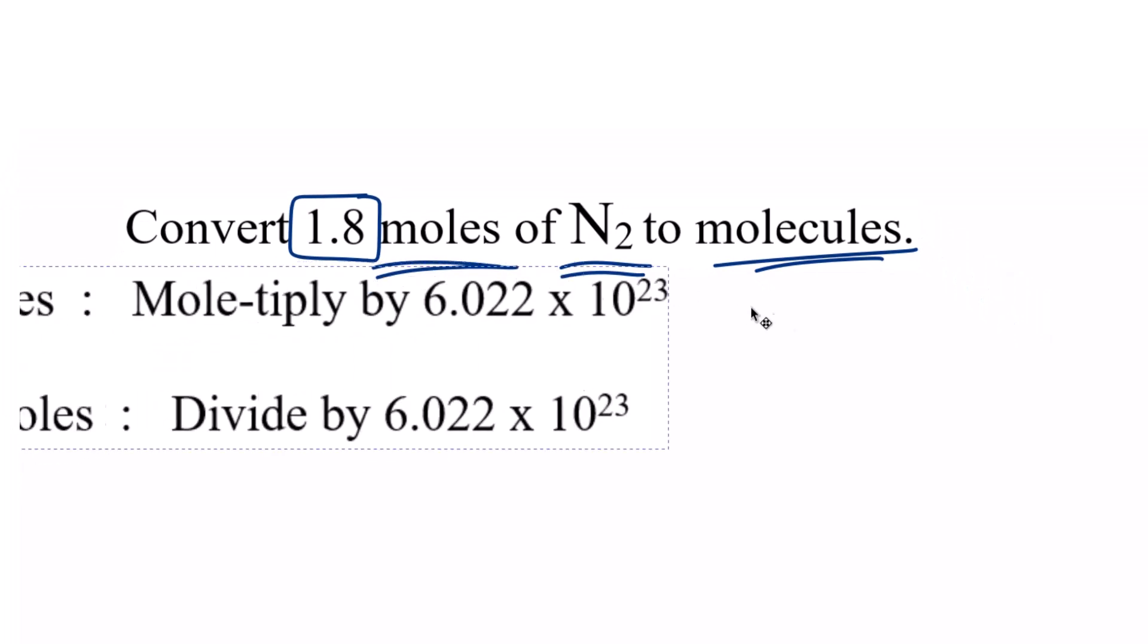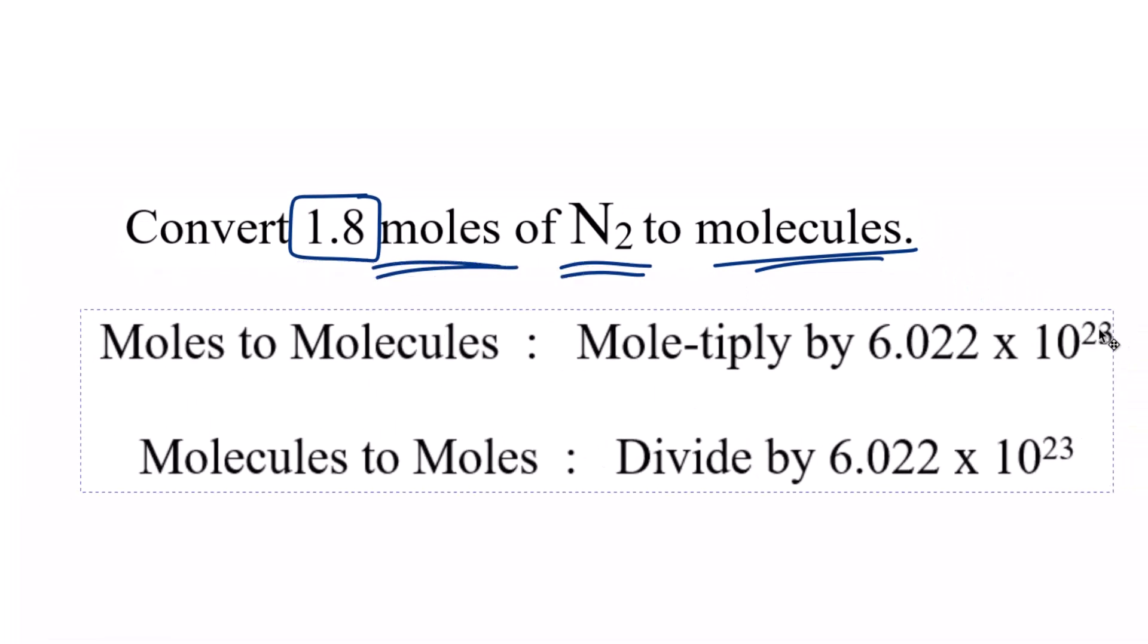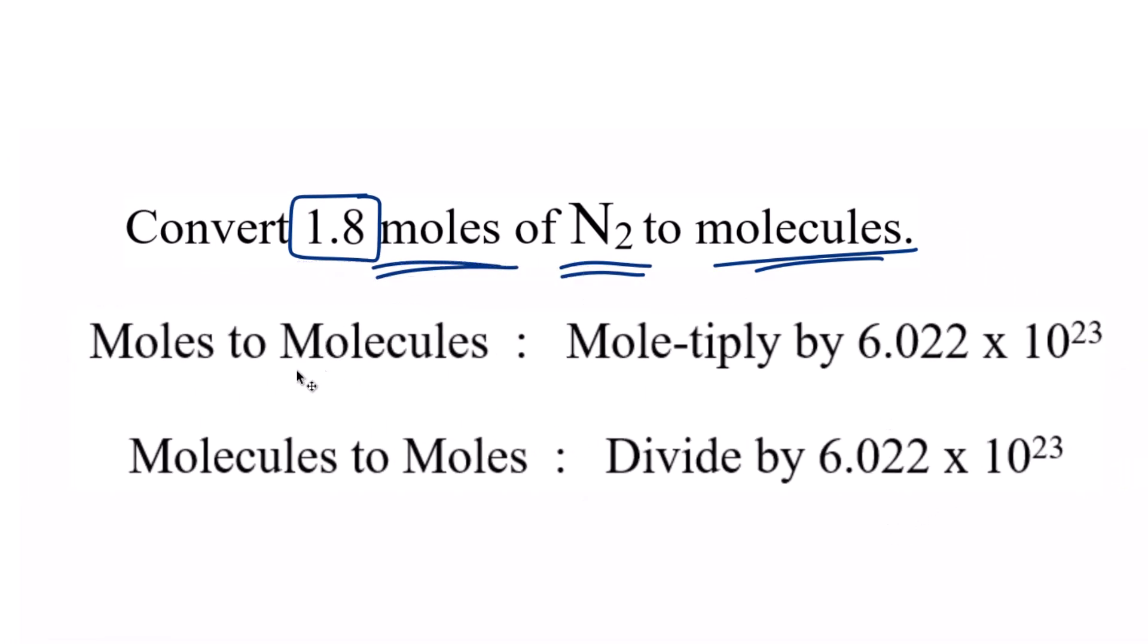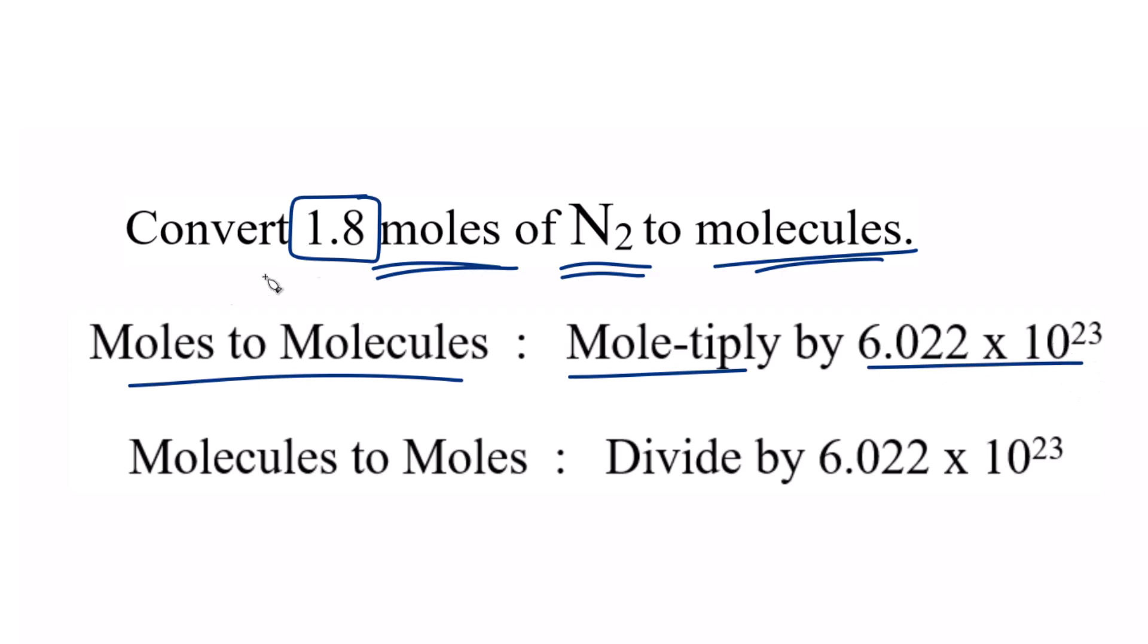So it's helpful to think of it this way, kind of a mnemonic to help you remember. When you're going from moles to molecules, you multiply by Avogadro's number. So we're going to multiply our 1.8 moles times Avogadro's number. That'll give us molecules.